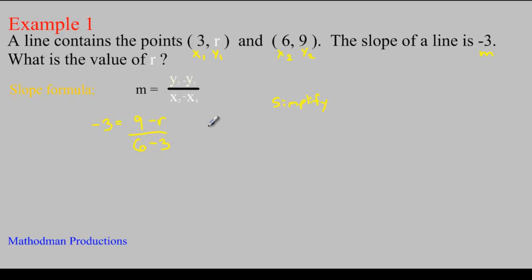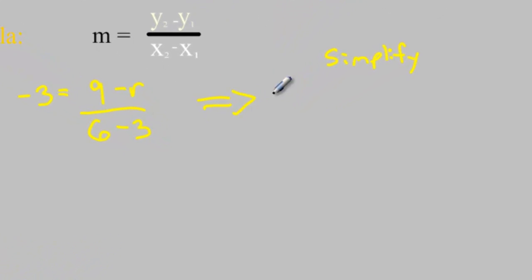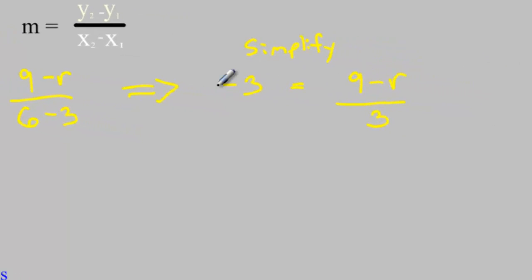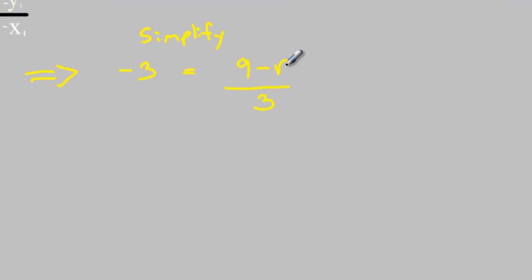Negative 3 equals 9 minus r over 6 minus 3. If you simplify it, you get negative 3 equals 9 minus r over 6 minus 3 is just 3. We're solving for r. I'm just going to highlight the letter you're going to solve for. So my first move is to get rid of that 3 at the bottom by multiplying by 3 to both sides.